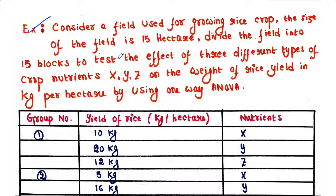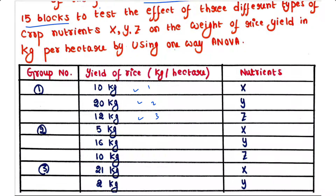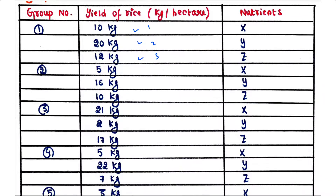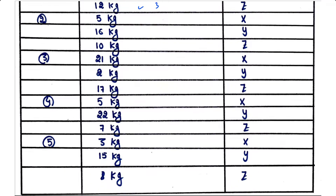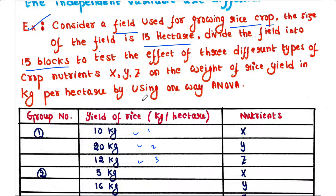Let's take an example. Consider an agricultural field used for growing rice crop. The size of the field is 15 hectares, so we will divide the field into 15 blocks — block 1, block 2, block 3, and so on — for a total of 15 blocks. In each block we will check the rice yield. We are applying three types of crop nutrients: X, Y, and Z.